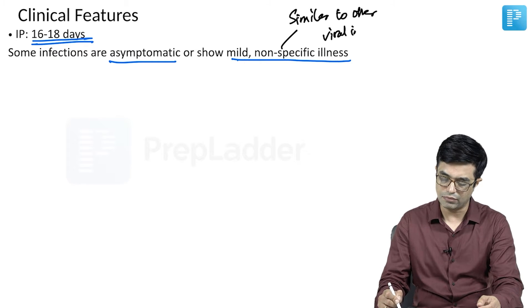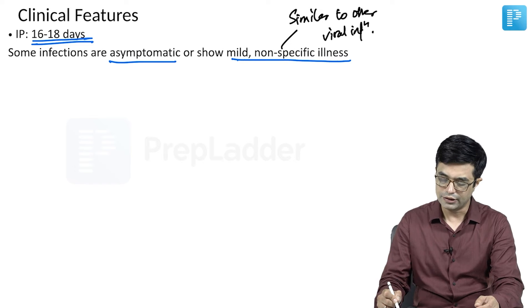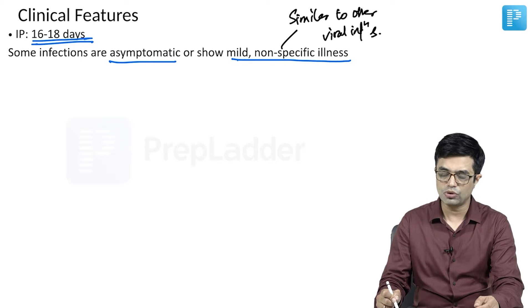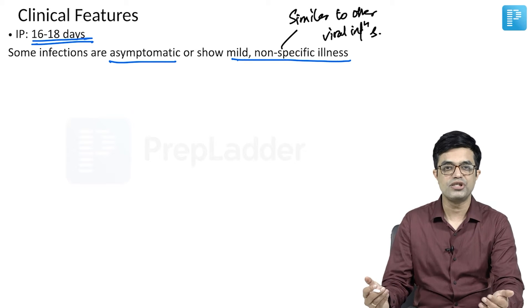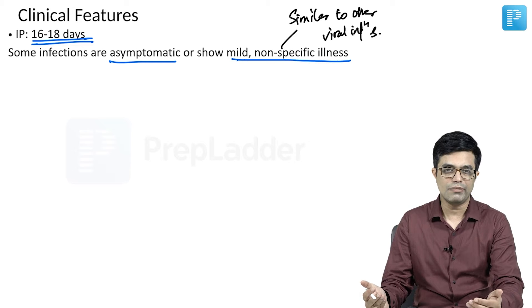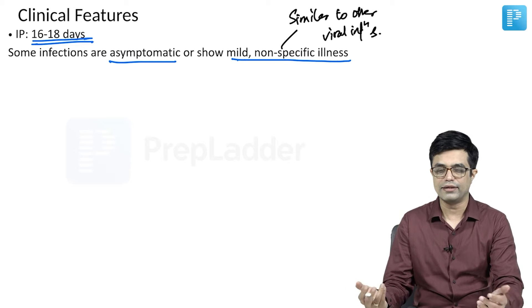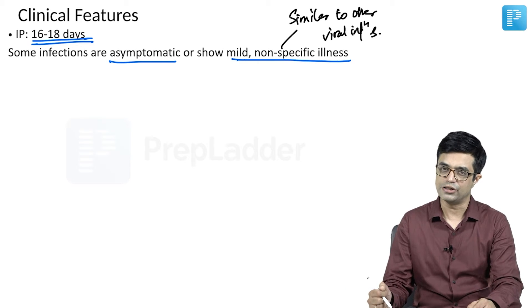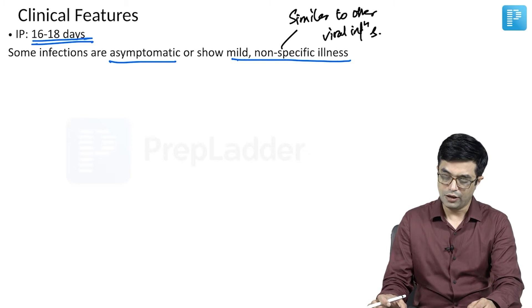There will be some moderate grade fever, sore throat, some degree of myalgia, retroorbital pain, headache, irritability, and malaise. Then, a few days later, the child will improve.